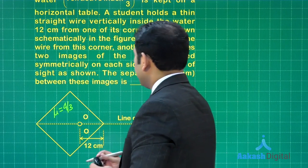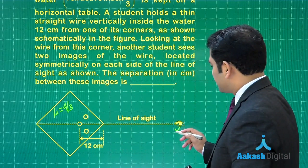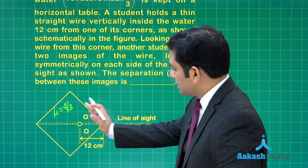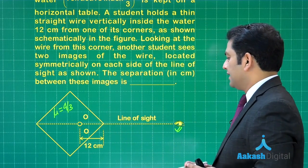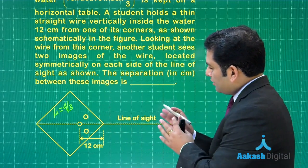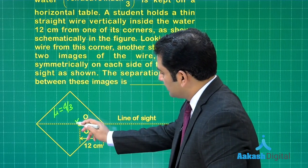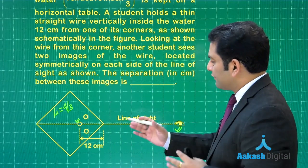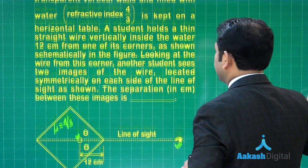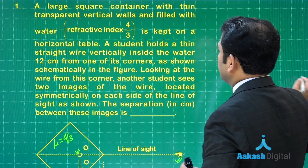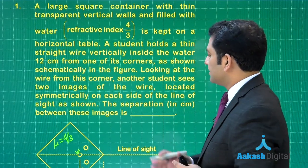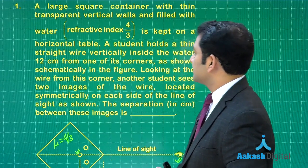Here is an observer. The observer is viewing towards this side and the object is here. Because of refraction on both sides, let us see what happens. A student holds a thin straight wire vertically inside the water.